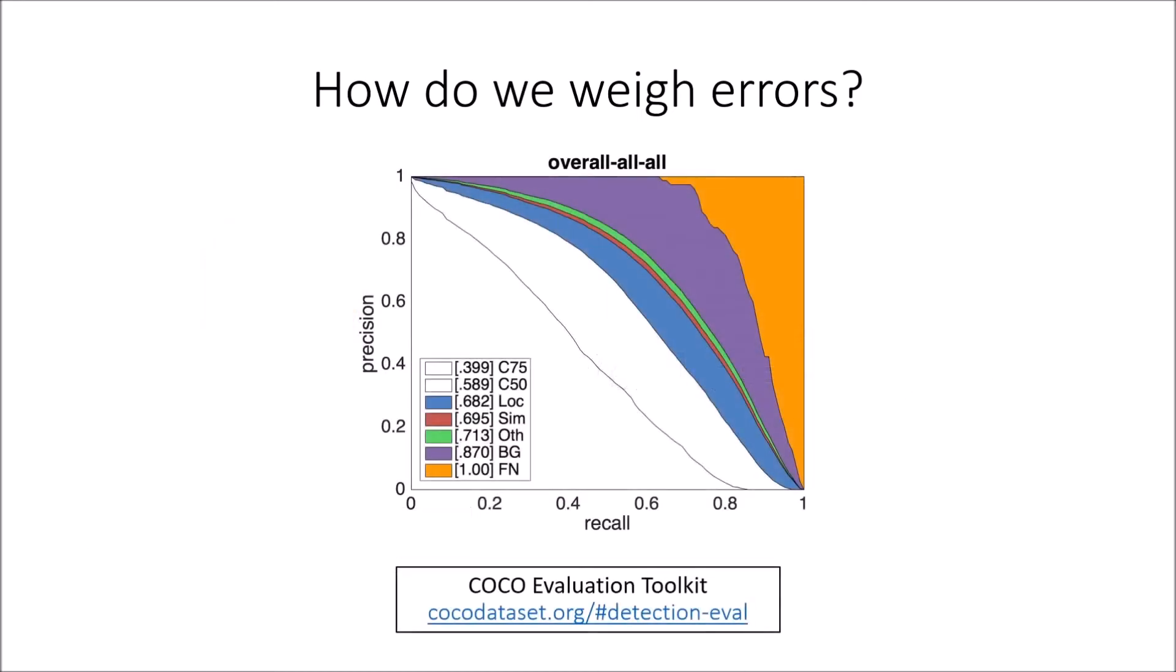The COCO evaluation toolkit, on the other hand, attempts to update Hoiem et al.'s work by representing errors in terms of their effect on the precision recall curve. However, the plots they produce are difficult to interpret, and more importantly, turn out to be drastically misrepresenting the importance of certain error types.